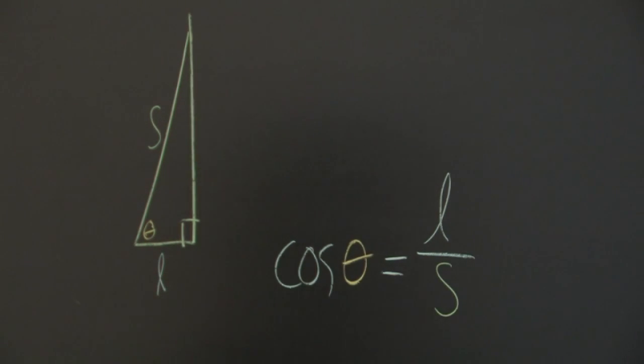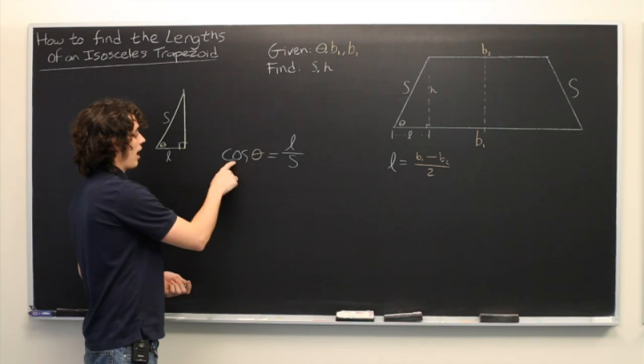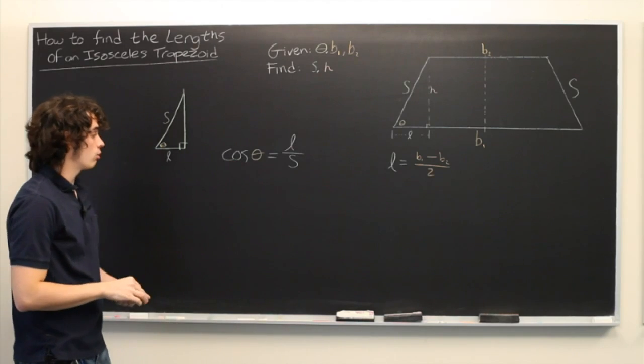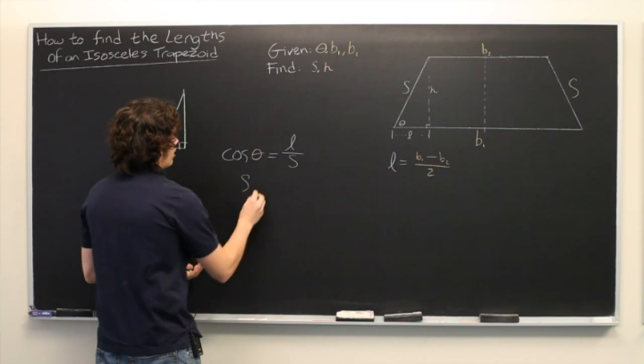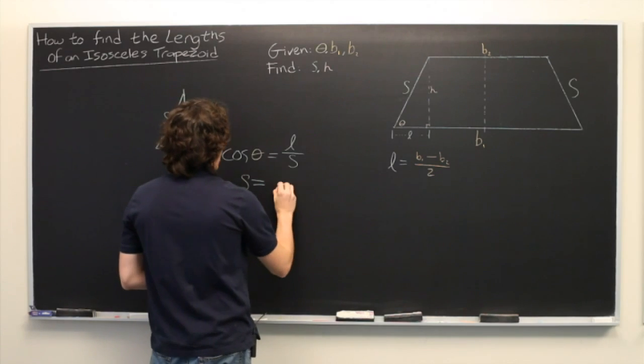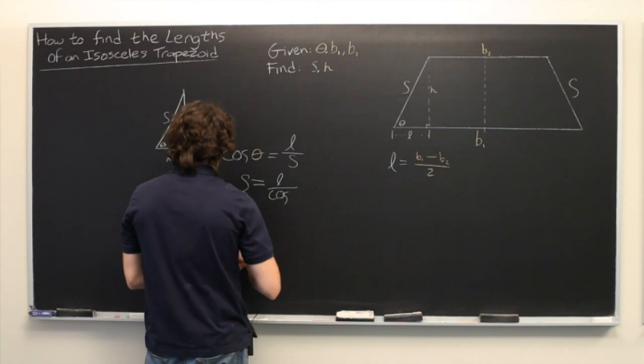From here, we can simply multiply both sides by S and divide both sides by cosine theta to arrive at an explicit formula for S. See that S is equal to L over cosine theta.